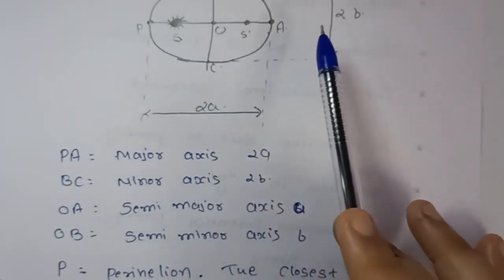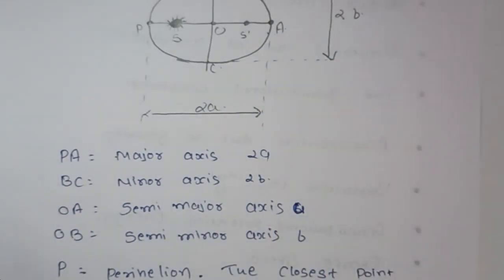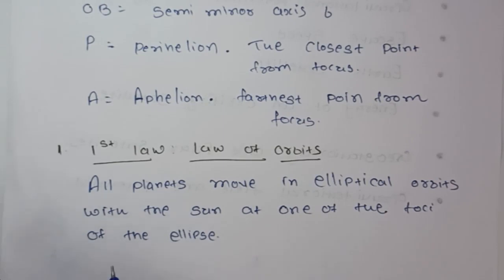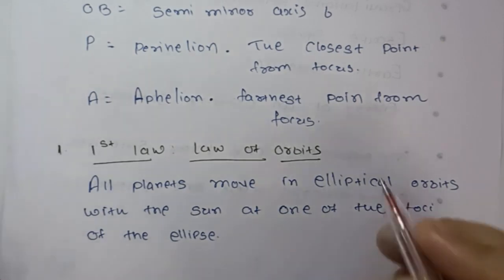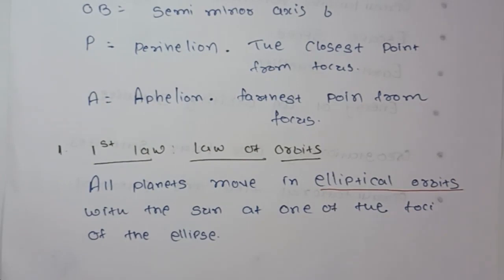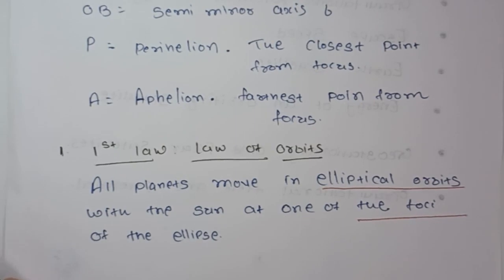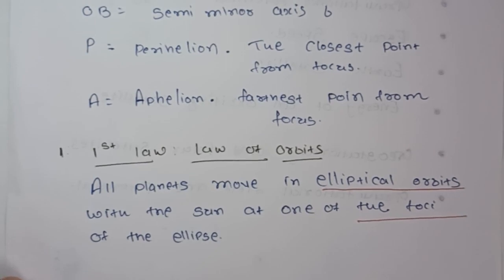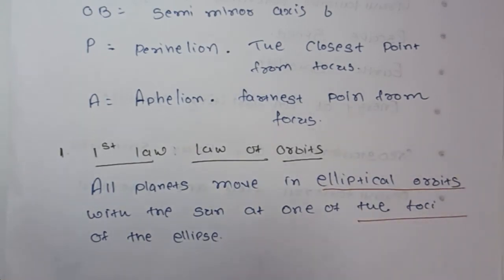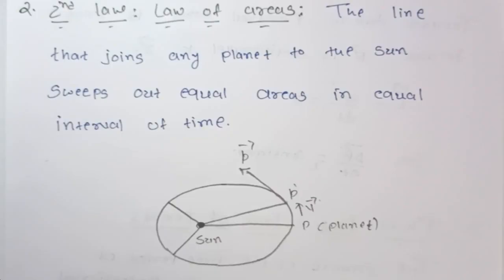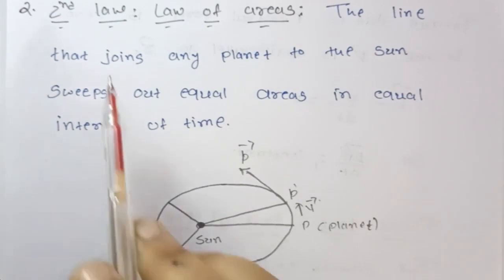Now let us see the first law. It states that all the planets move in elliptical orbits with the Sun at one of the foci. Initially it was a misunderstanding that all the planets revolve around the Sun in circular orbits. Kepler removed this misunderstanding and said that all the planets revolve in elliptical orbits and the Sun is at one of the foci.